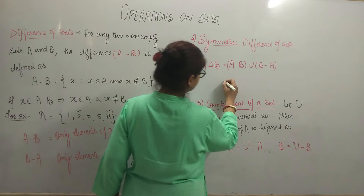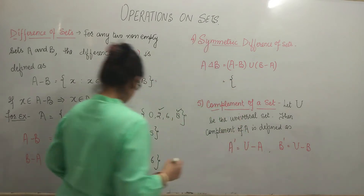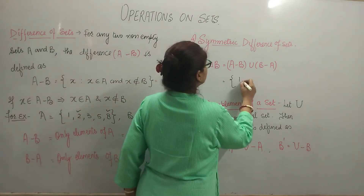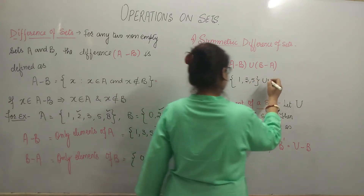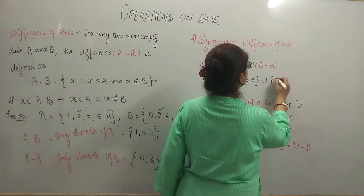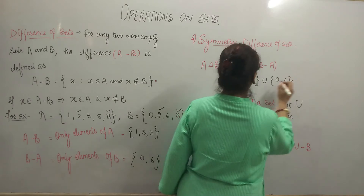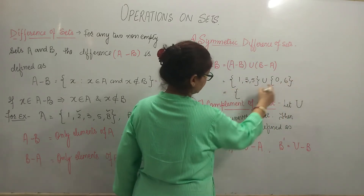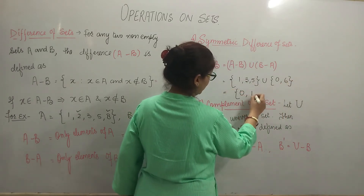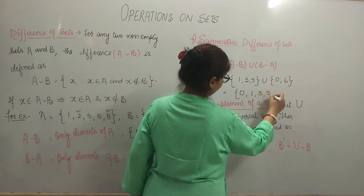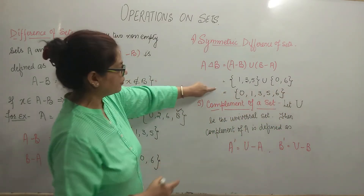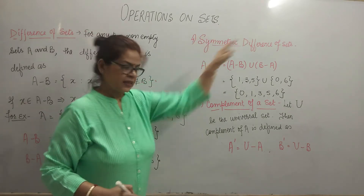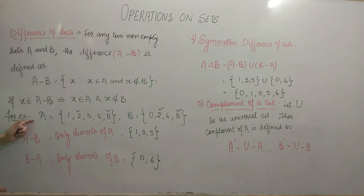Let us unite these two sets. If we take union of {1, 3, 5} and {0, 6}, you will get 0, 1, 3, 5 and 6. This is the symmetric difference of sets A and B for this example.